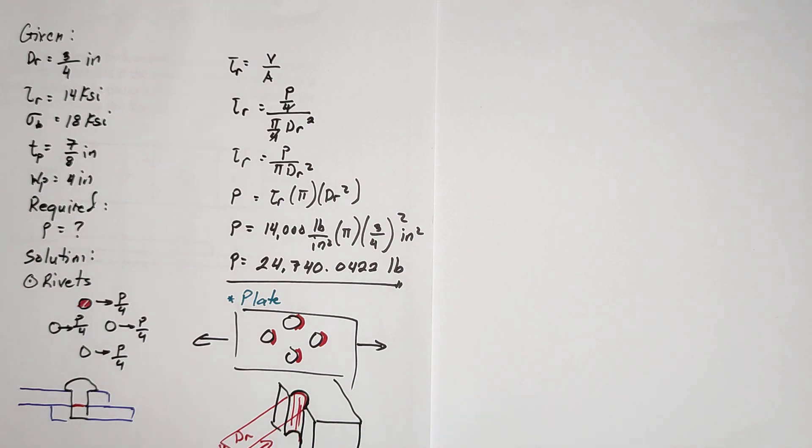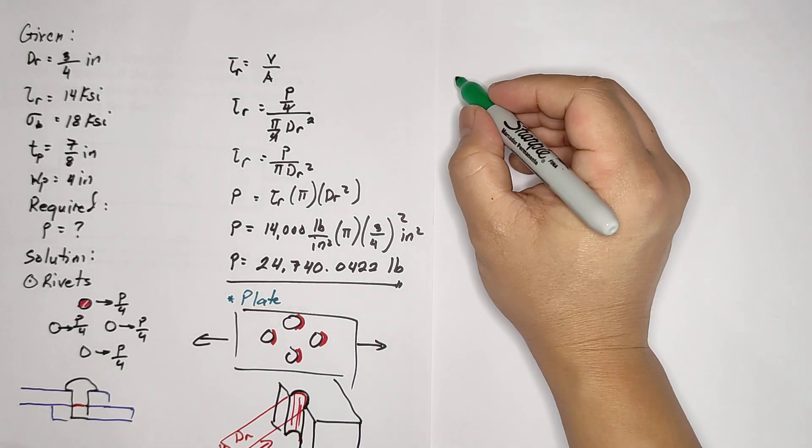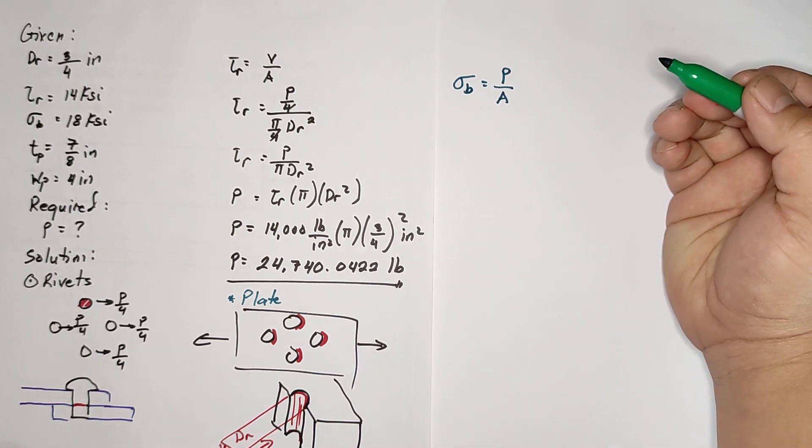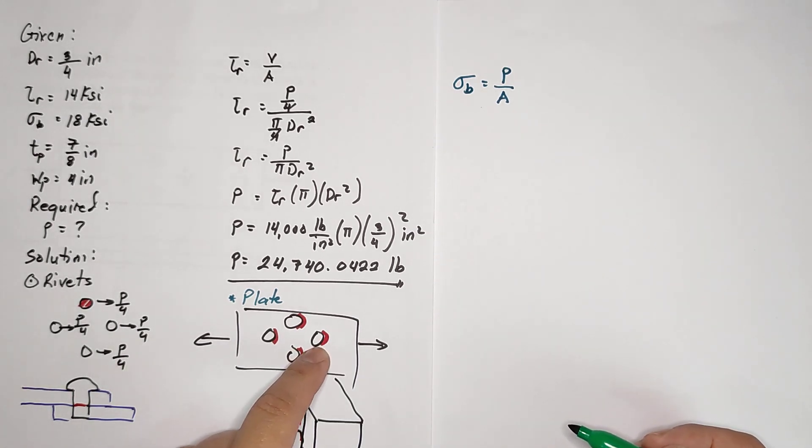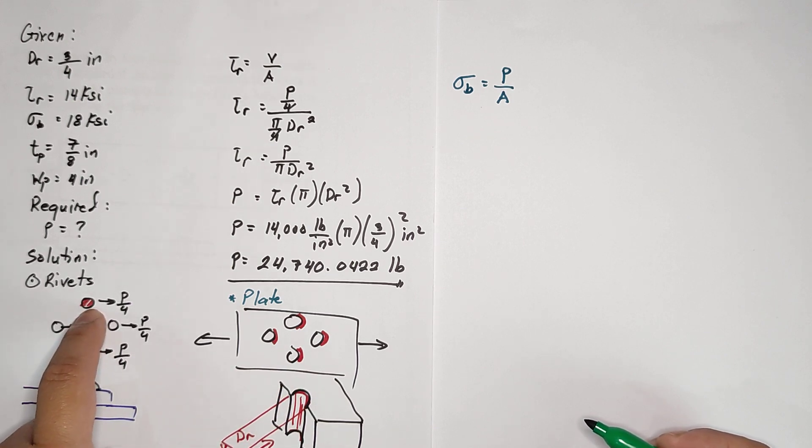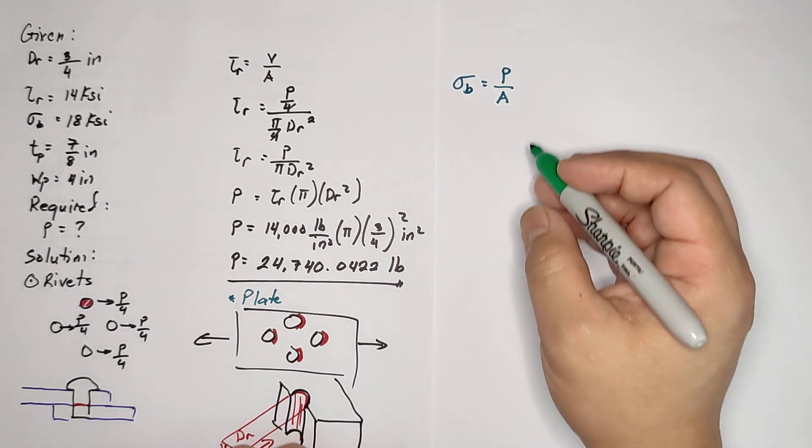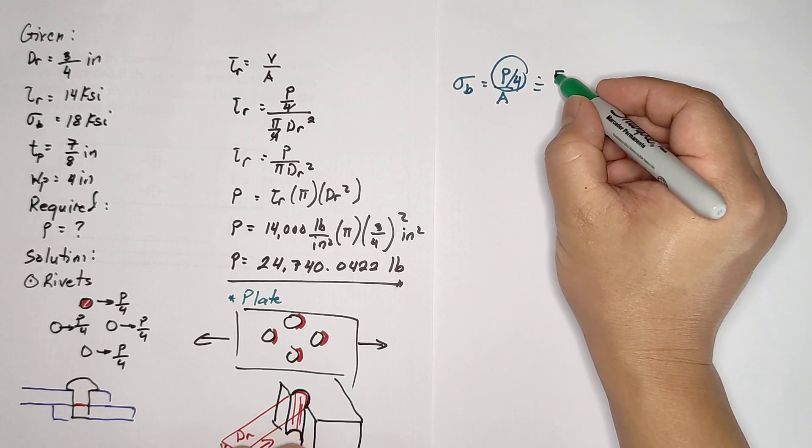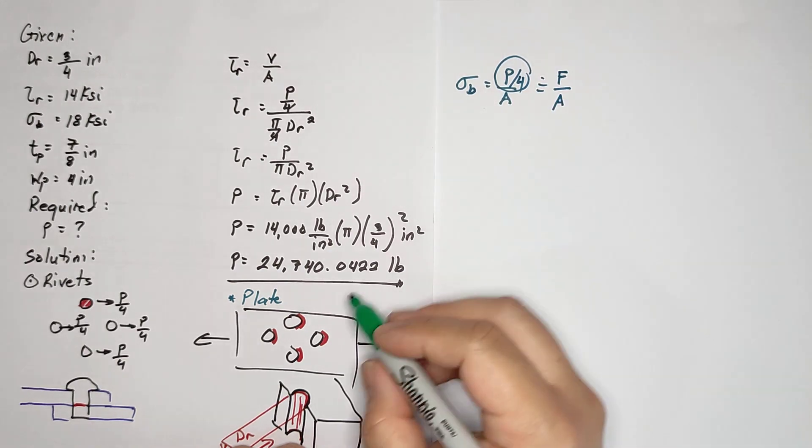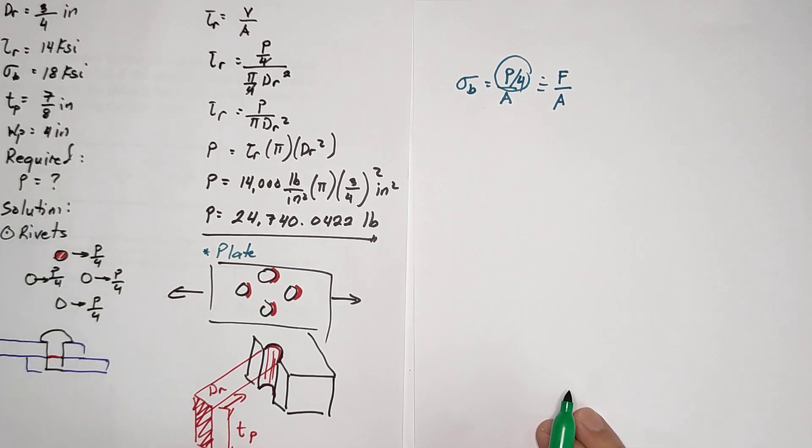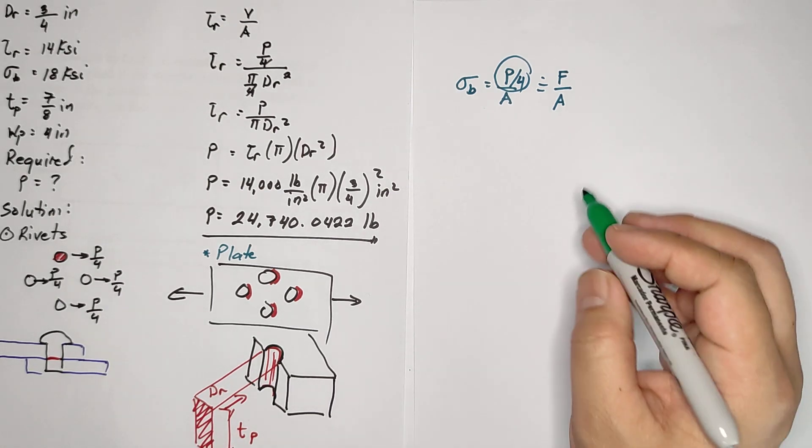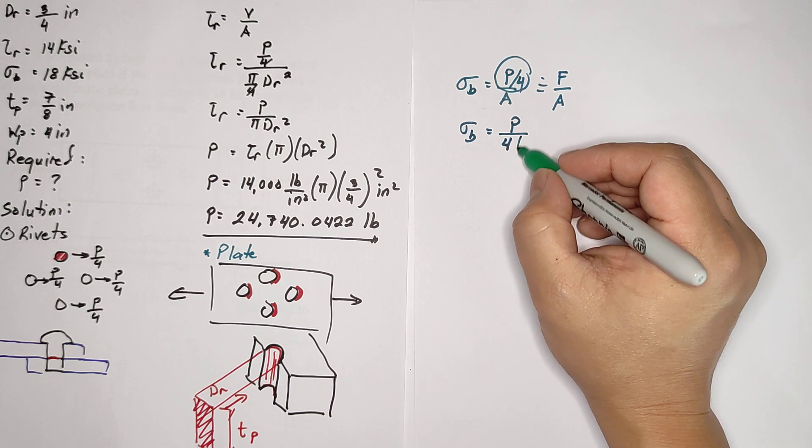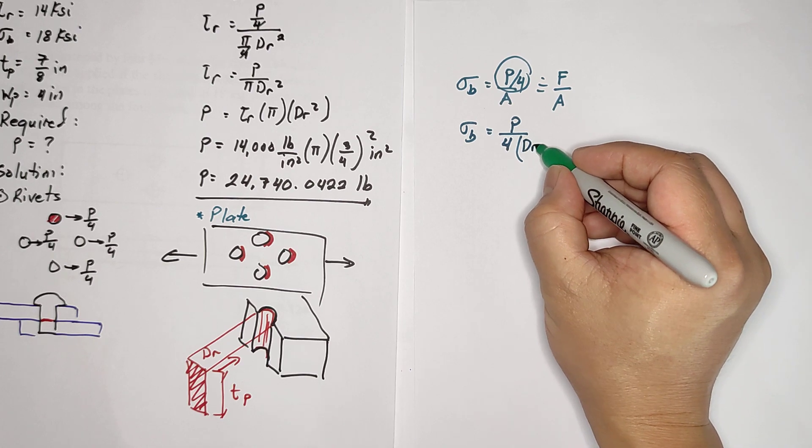For the bearing stress: σ_b = force over area. We're looking at one hole only, and one hole experiences P/4. The original equation is force over area - the force experienced by one hole is P/4, so this becomes P/4 divided by the projected area dr times tp. Therefore P = 4 × σ_b × dr × tp.